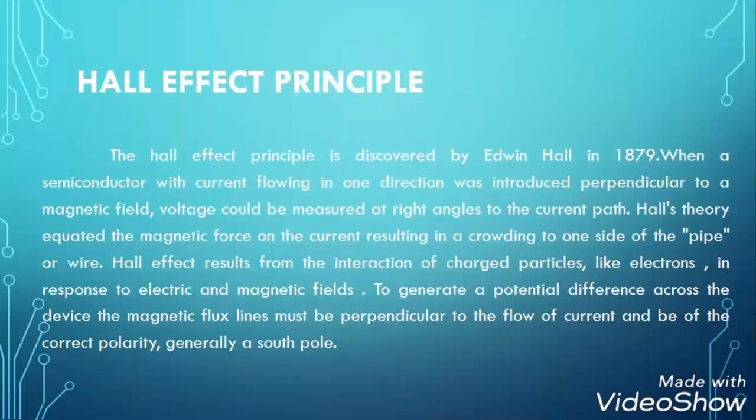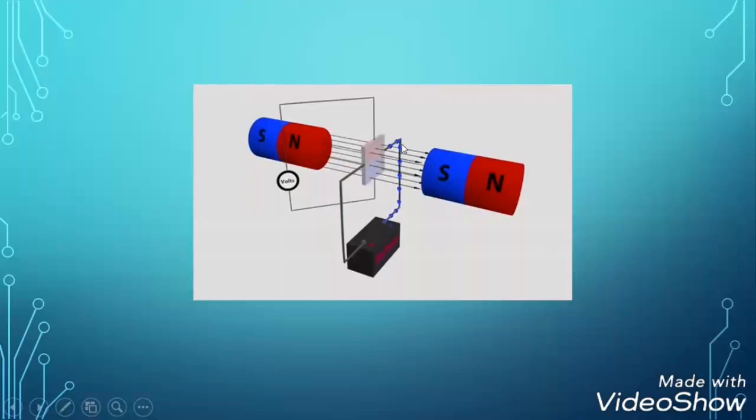Hall effect principle is the voltage development between the magnetic field when a current is flowing through a conductor. When we take a conductor which current is flowing through it and we place it in the magnetic field perpendicularly, the voltage is developed between the plates, and we measure that voltage — we measure the Hall voltage.